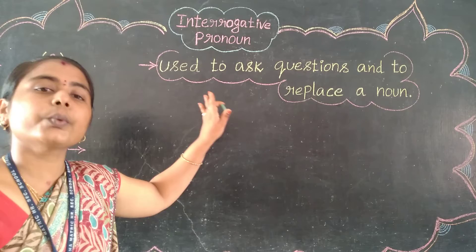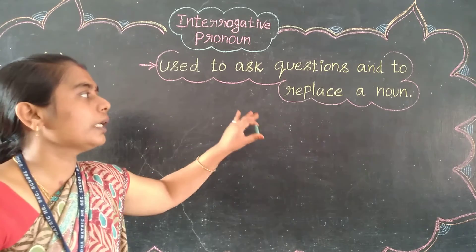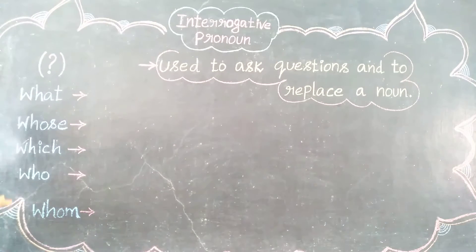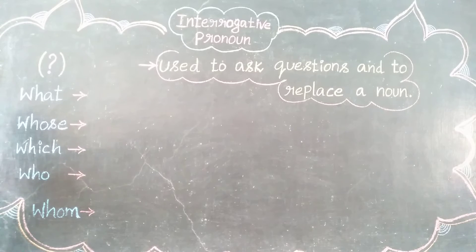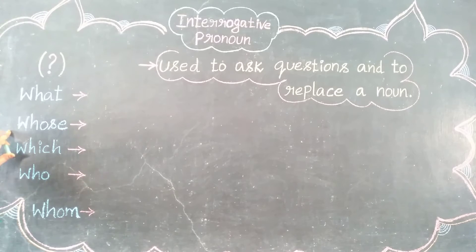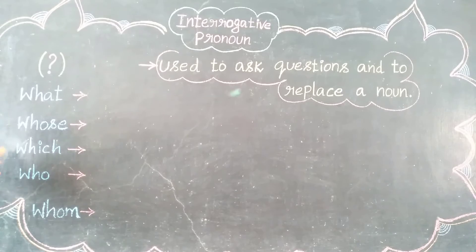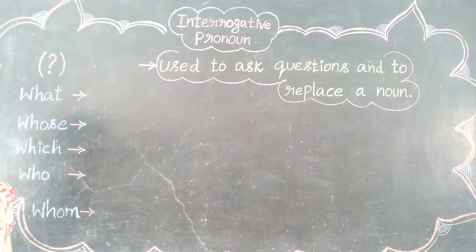So what are the interrogative pronouns we have? There are five question words. Let me repeat them: What, Whose, Which, Who, Whom. These five words always indicate a question mark at the end of the sentence.